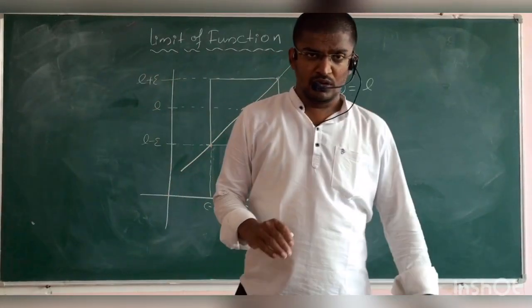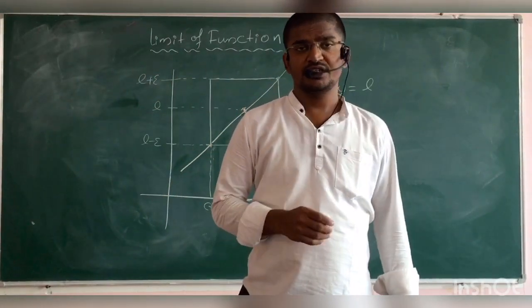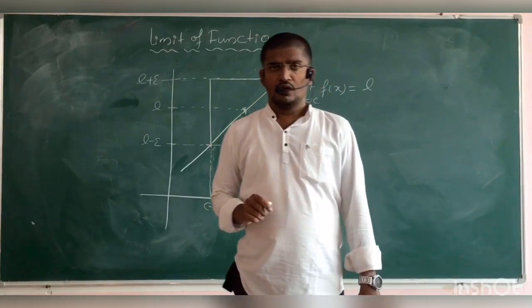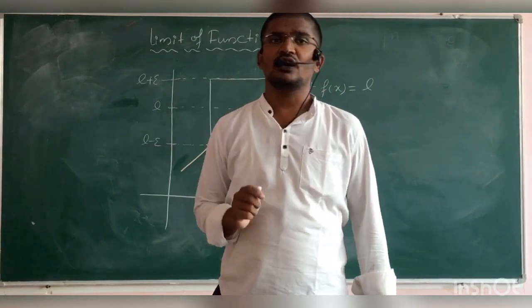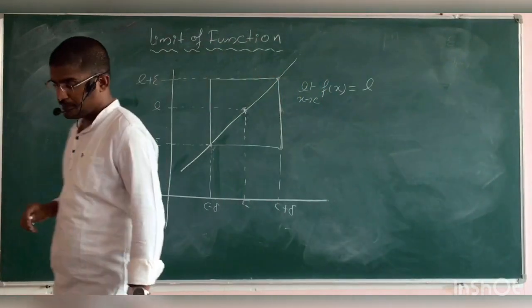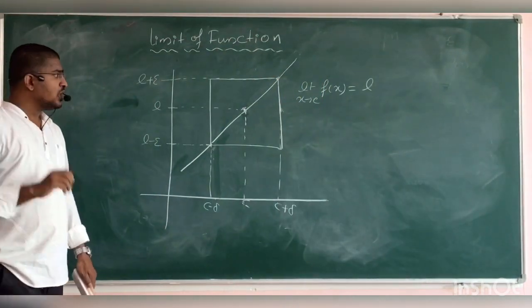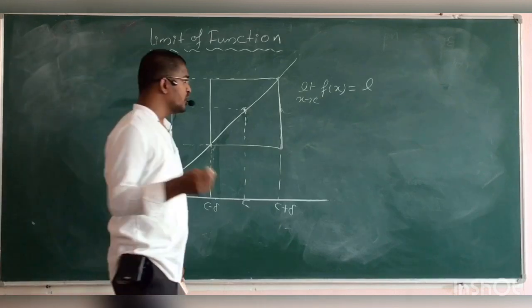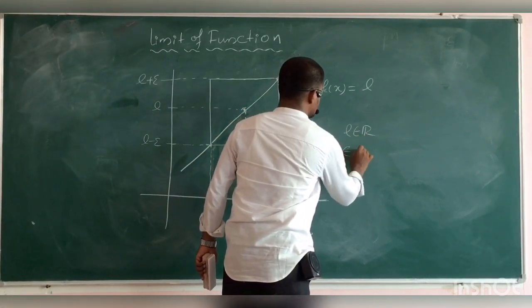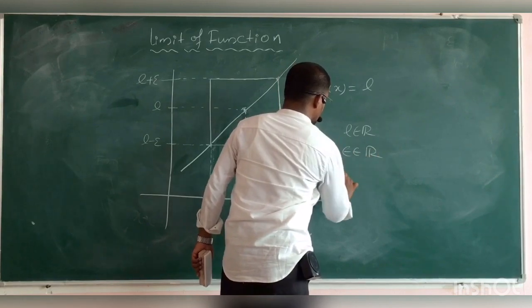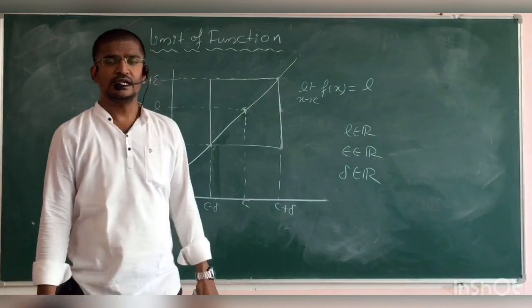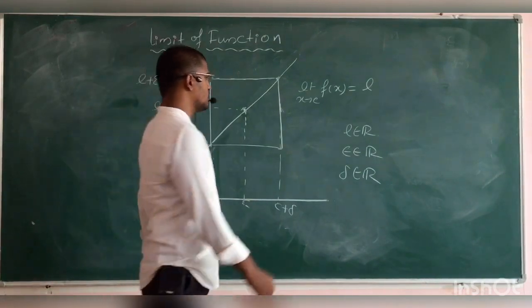Okay students, now you saw the definition of limit of a function. For the explanation of the graphical representation of a limit of a function, see this graph. L becomes the real number, epsilon also becomes the real number, delta is the real number, where epsilon and delta are greater than 0.